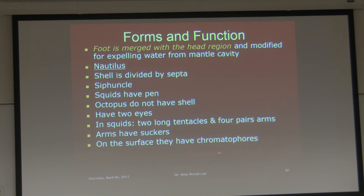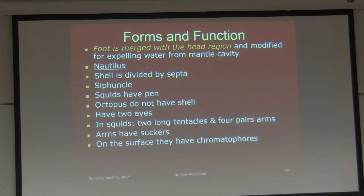Cephalopods are very interesting animals. They have chromatophores — do you remember that from exam one? They can change colors. They camouflage themselves by changing color, and what is still a mystery is how they know the color of their environment — whether it's brown or gray — and change accordingly. That is amazing. They do not have the color receptors we think they should, yet they change to match the environment they are located in.